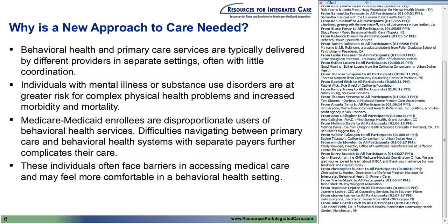Some of this increased risk is due to medications, and partly because we haven't done a great job talking about physical health in the mental health space, or mental health in the physical health space. The dual-eligible population uses a disproportionate amount of behavioral health services. This is a problem because of the difficulty navigating between primary care and behavioral health systems, often made more complicated by separate payment structures. Individuals with an SPMI diagnosis may feel more comfortable receiving care in a behavioral health setting, making it all the more important to integrate primary care into community mental health centers.